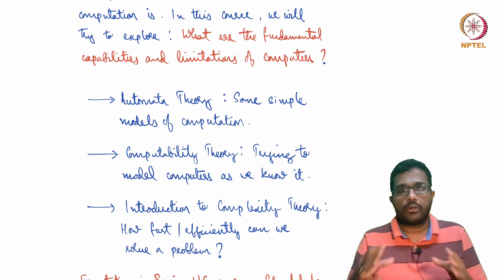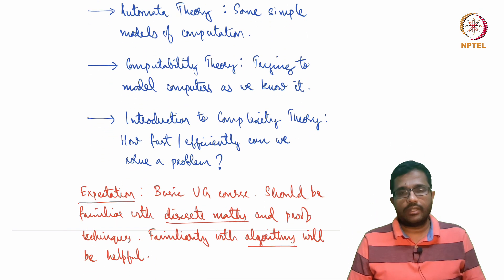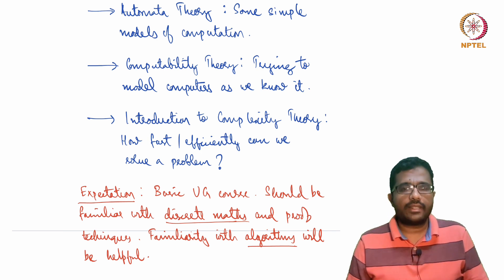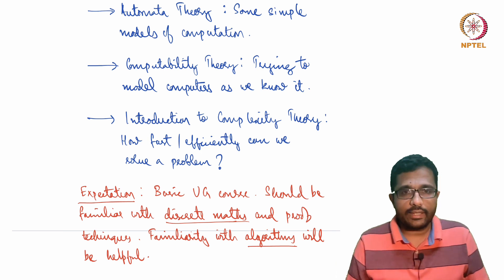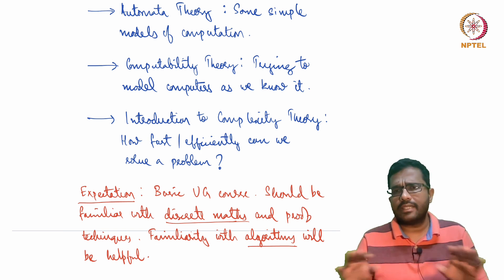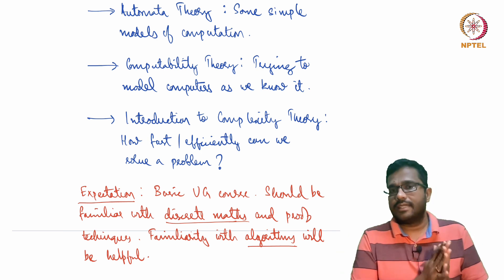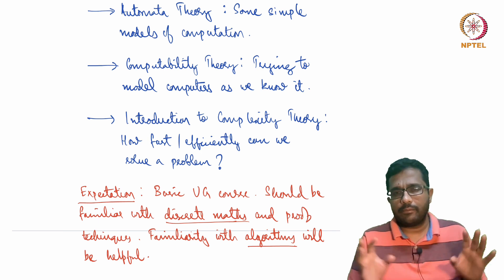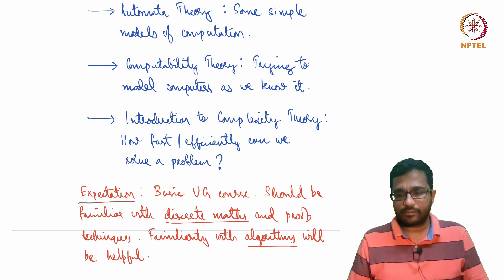These three topics constitute a broad overview of the course. Now let me come to the expectations from students. This is a basic undergraduate course, fairly standard in any BTech curriculum in computer science. If you know basic discrete mathematics - that is, proof techniques - it will be good. If you have familiarity with algorithms, that will be even better. But at least basic discrete math and proof techniques like sets, functions, relations, how to make inferences and proofs - this is essential. If you have some basic familiarity with algorithms, even if you are learning it at the same time, that will be helpful.